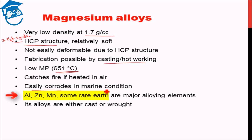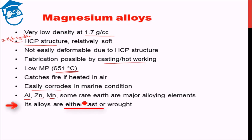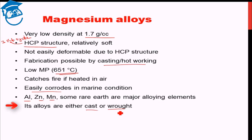The alloying elements normally used for magnesium alloys are aluminium, zinc, manganese, and some rare earth metals. Magnesium alloys are either cast or wrought. Cast means liquefied and shaped. Wrought means it can be treated by different deformation processes. Alloying basically improves the deformation behavior slightly, so it can be either cast or wrought.